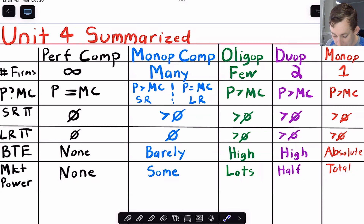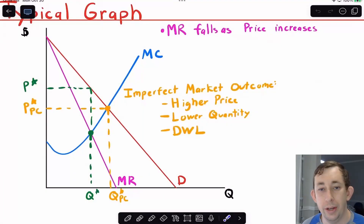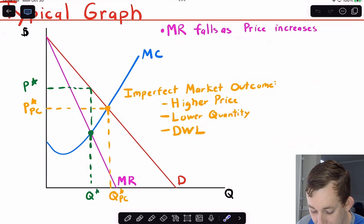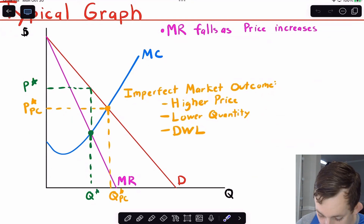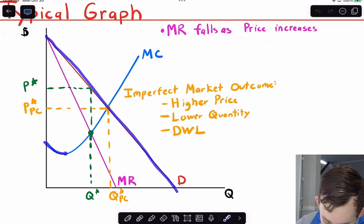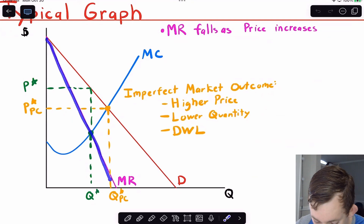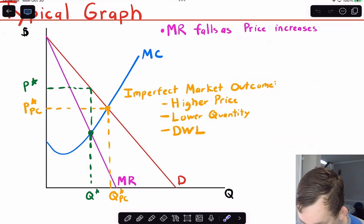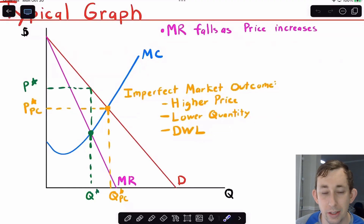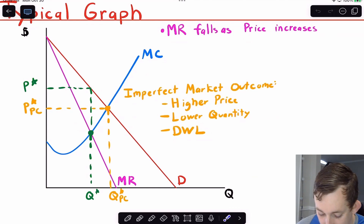Let's go ahead and go on to a graph. Here is a typical graph that we're going to talk about for imperfect competition — I'm going to set perfect competition aside for a second. You can see we have a demand curve, a marginal cost curve, and this new curve called marginal revenue. Why is the marginal revenue curve under the demand curve? As you increase the price, your extra revenue — that's the marginal revenue curve — is not as high as the change in demand.